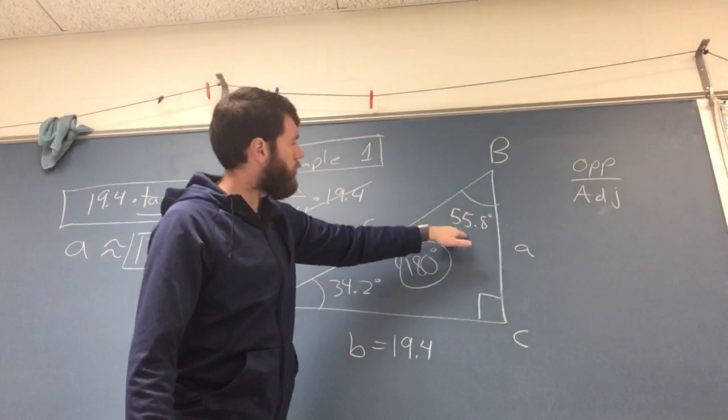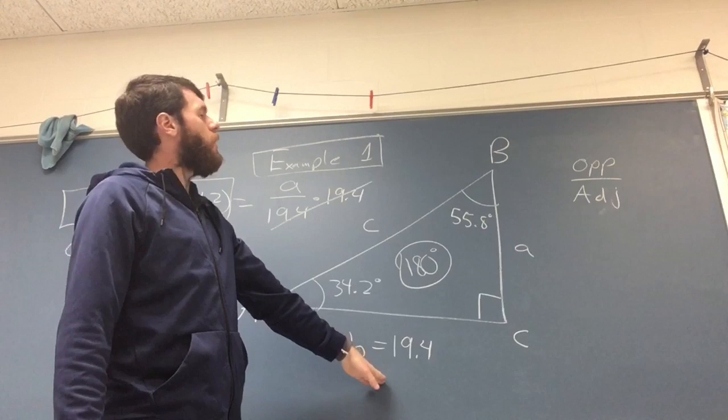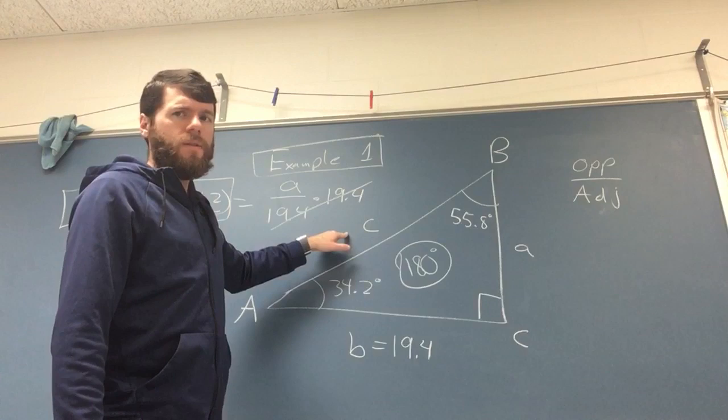So relative to this angle, I have B. Yes, I know I have A, but I'll pretend I just have B. That's opposite, and I want to find the hypotenuse. Opposite and hypotenuse.